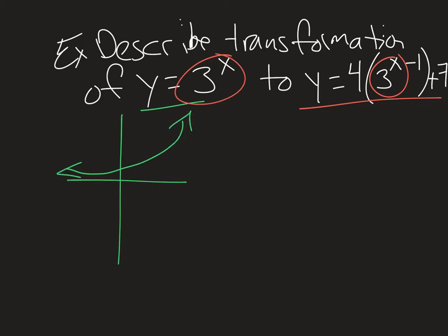So we know that 3 to the x is going to look somewhat like this. It's going to be very close to 0 on one side, and it's going to take off to infinity on the right. And we want to figure out how has this equation been shifted from 3 to the x?